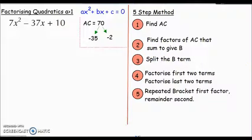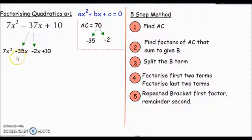Then we move on to step 3, which says split the B term. I've got to rewrite this equation with the B term split up into the two factors I found: -35 and -2. I've rewritten the quadratic: 7x² - 35x - 2x + 10. The B term is now written in two separate terms. I've split the -37x into -35x and -2x because that still makes -37x, then put the +10 on the end.